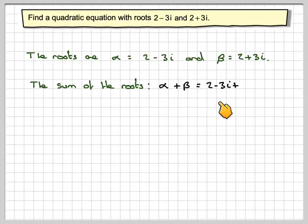will do exactly the same. 2 minus 3i plus 2 plus 3i. The minus 3i and the plus 3i will cancel out. We just get 4. So that's going to be alpha plus beta is minus b over a.